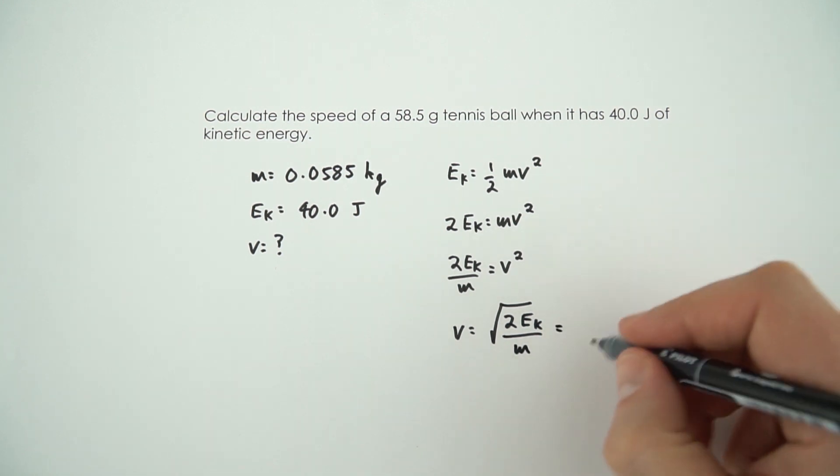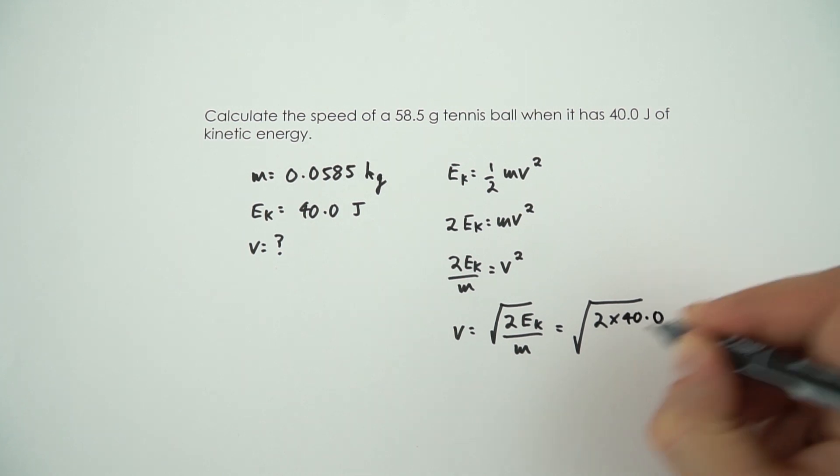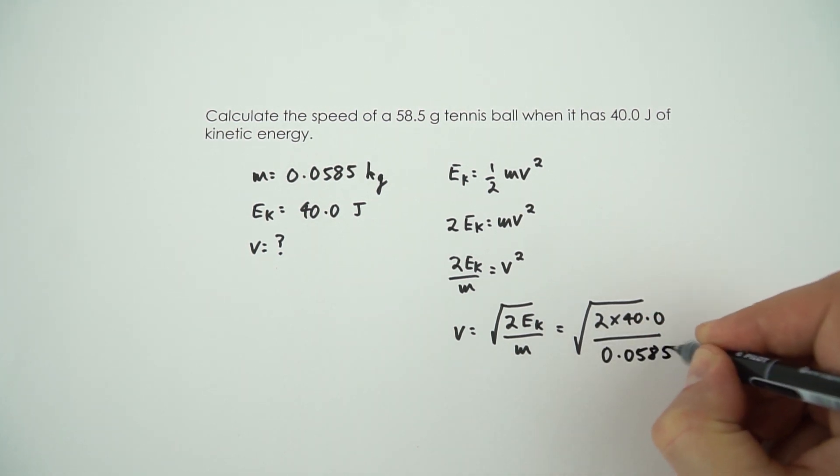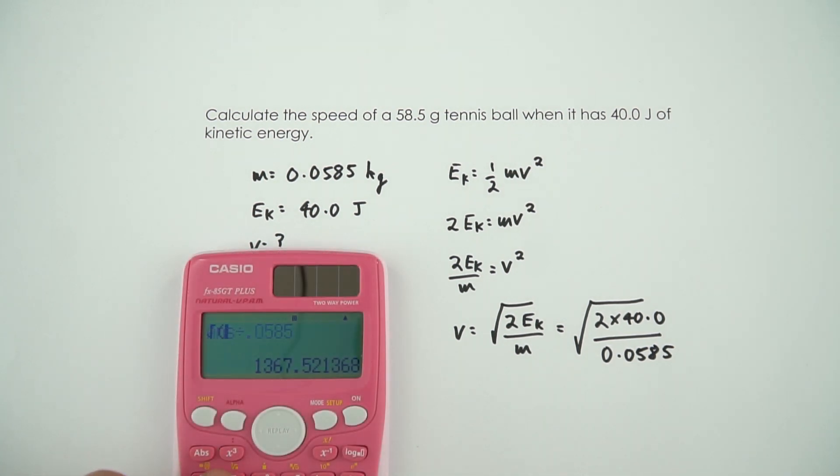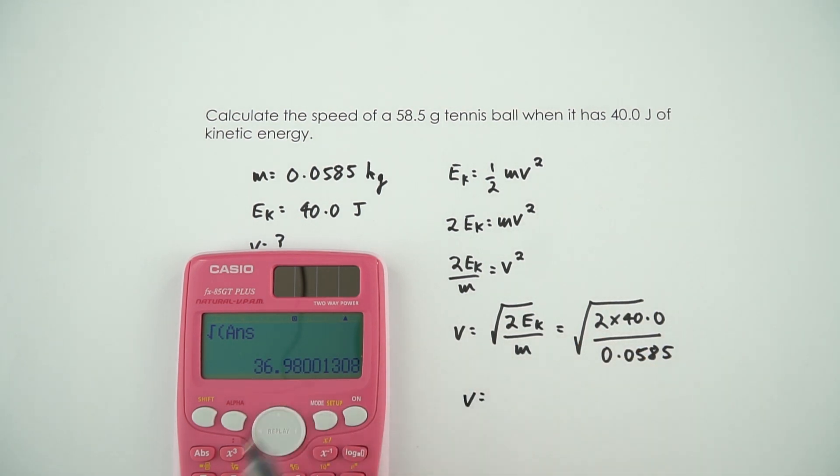So I can then put the numbers in. This is equal to 2 times 40.0 divided by 0.0585. And square root that answer. Make sure that you remember to do this last step.